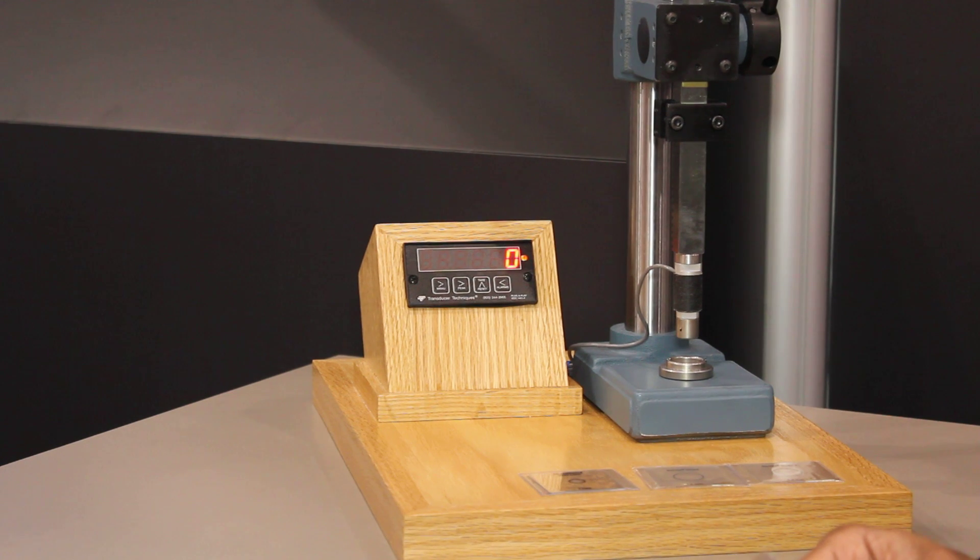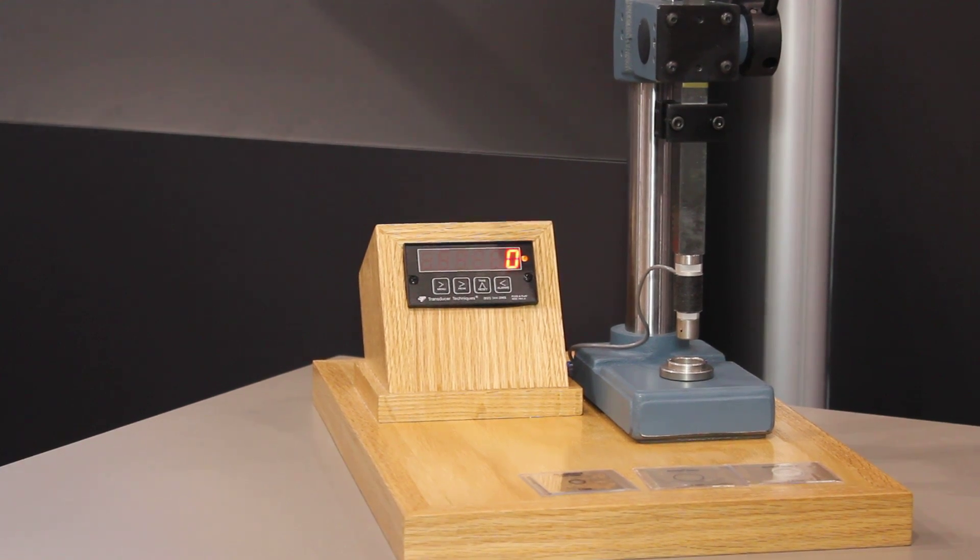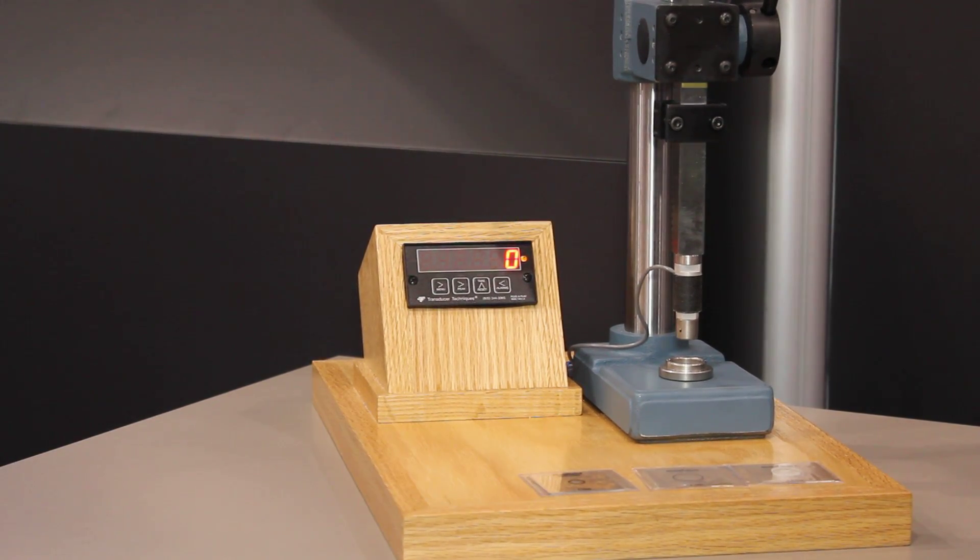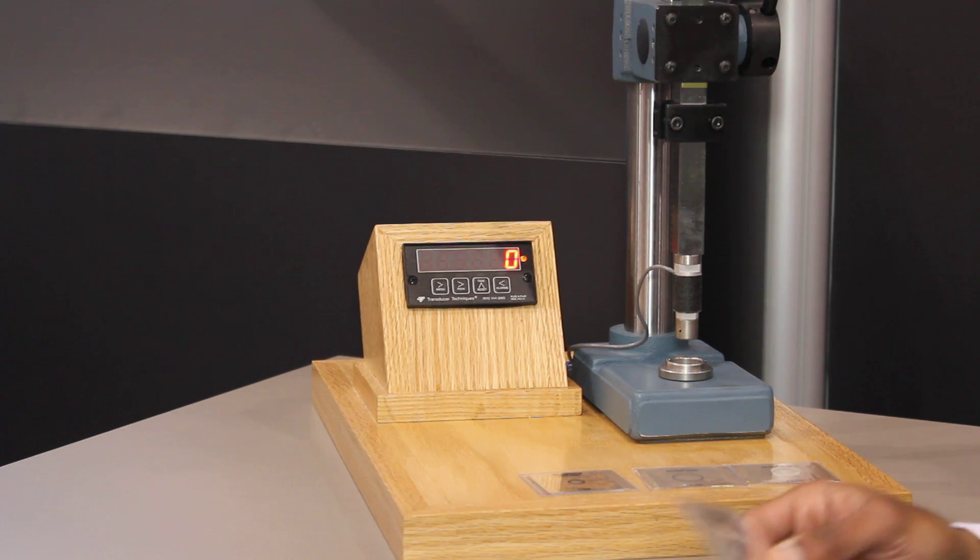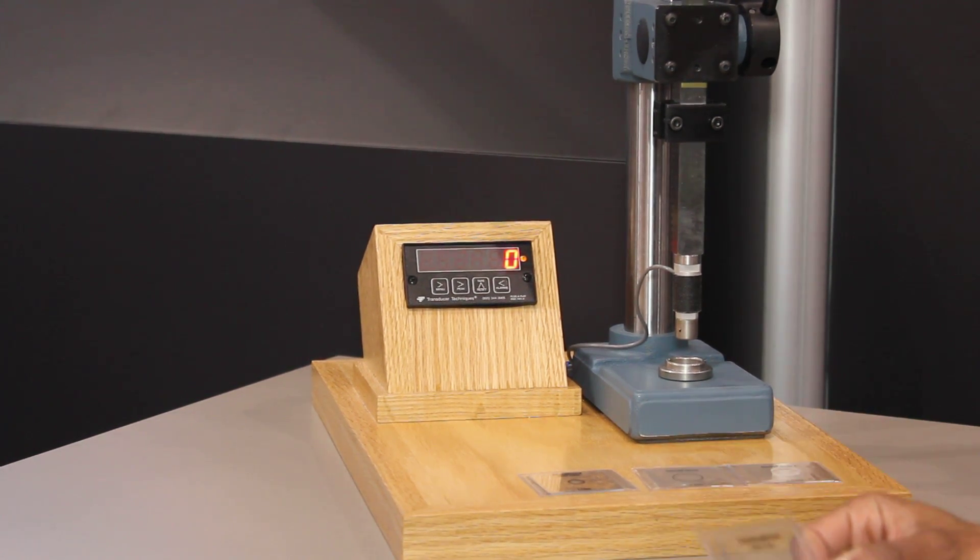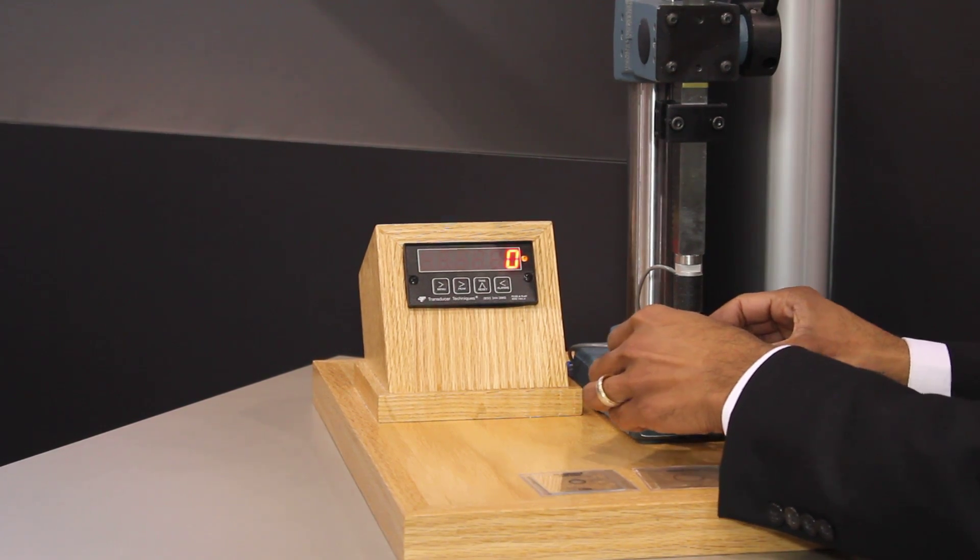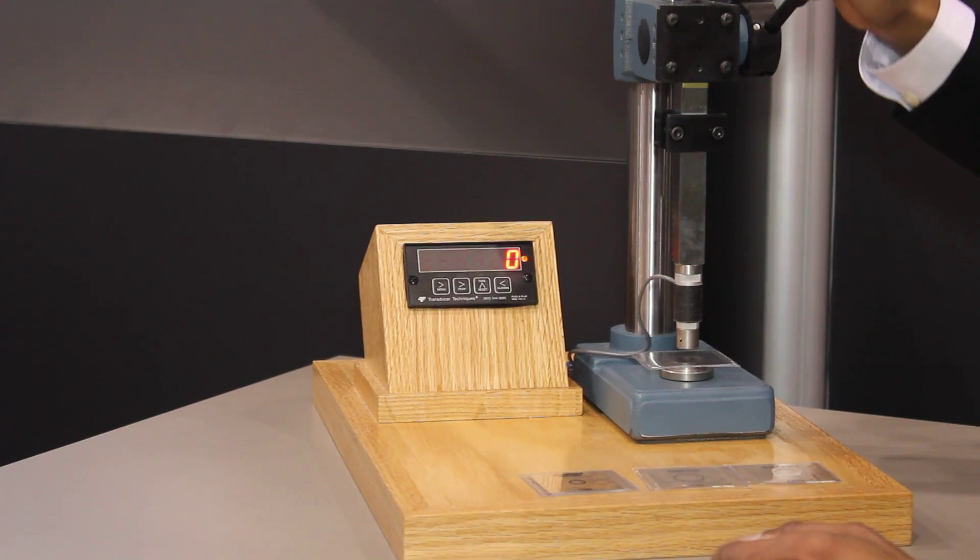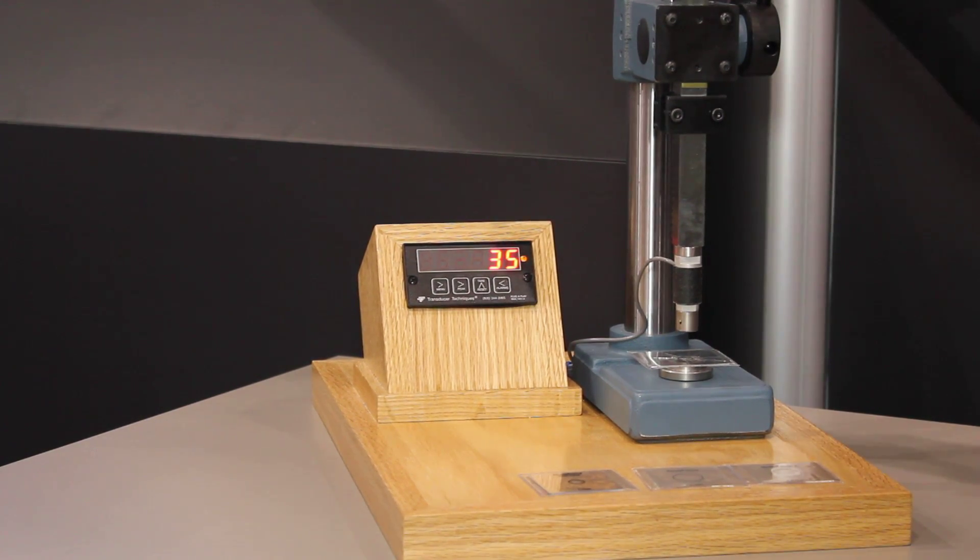I'll start with non-strengthened soda lime. Soda lime is standard window glass. It can be strengthened, and it has been on some phones and consumer electronic devices prior to Gorilla Glass. So we'll start with non-strengthened soda lime, and you'll be able to see the force at which the glass breaks. This is 1.1mm thick. I push down on this lever, and the glass breaks at 35 pounds.